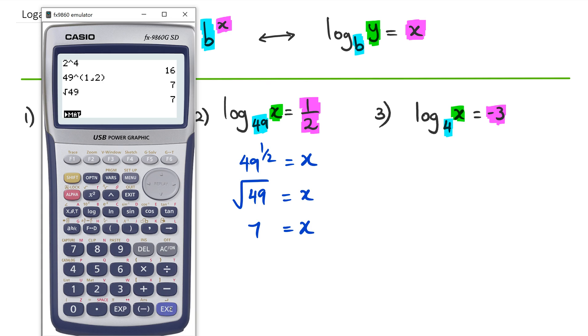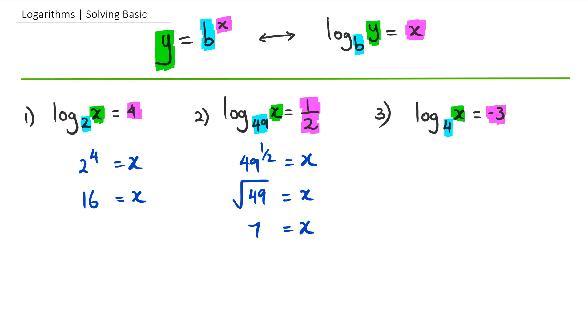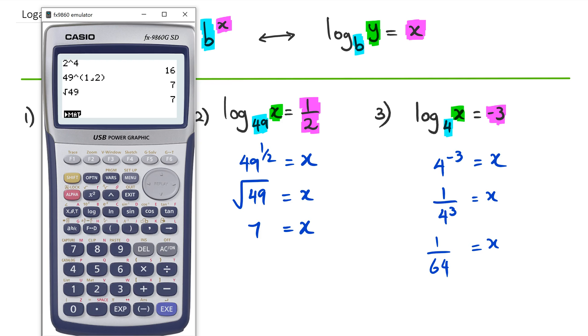In question three, we have 4 as the base and the power is -3, which equals x. Now we've got 4 to the power of -3, so we can rewrite this as 1 over 4 to the power of 3 equals x. We can solve this because 4 to the power of 3 is 64. But if you don't want to do this mentally, you can use your calculator and just go 4 to the power of -3.